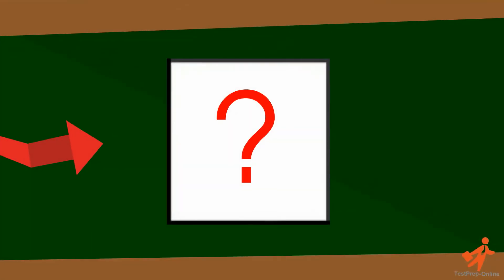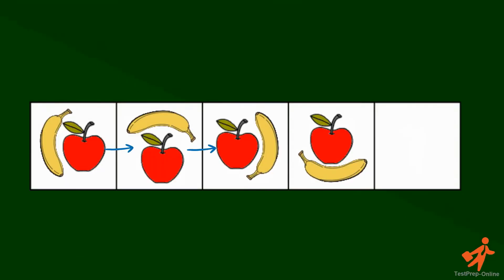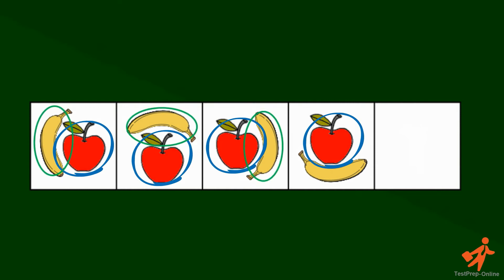How do we know which picture comes next? The trick with picture series questions is to understand the pattern. We can see that in this case the apple stays in the middle of the picture, while the banana keeps changing positions around it.